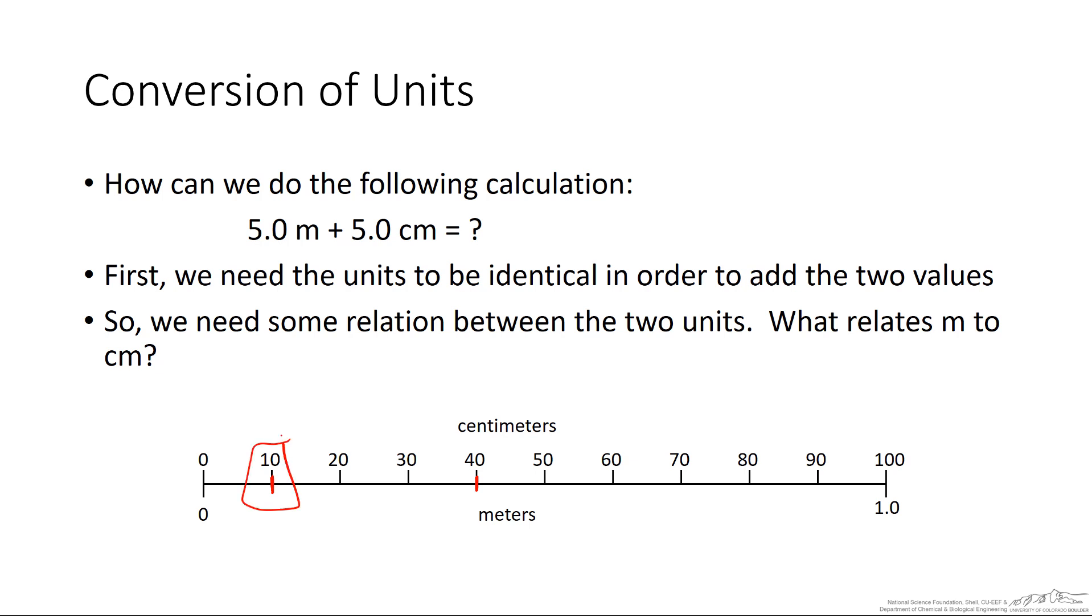So this could be a conversion factor. Ten centimeters equals 0.1 meters. So another common one that you probably use most often is 100 centimeters equals one meter. So these are all known as conversion factors.